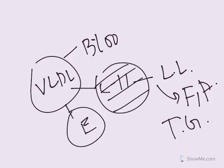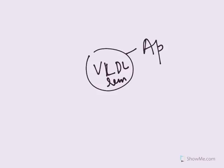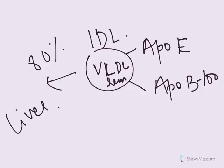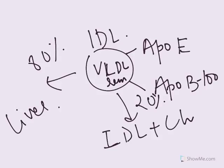And after this is gone, what remains is ApoE and B100. So once this thing called VLDL remnant has ApoE and ApoB100, it is called IDL, intermediate density lipoprotein. And 80% of this will go to the liver. What will remain, the 20% will circulate in the blood.